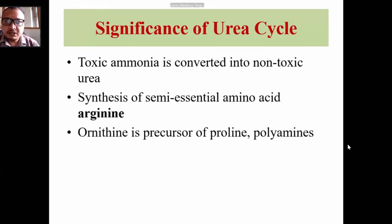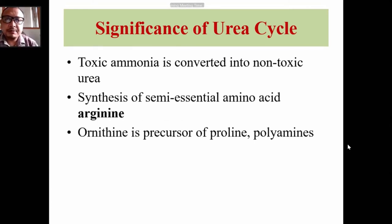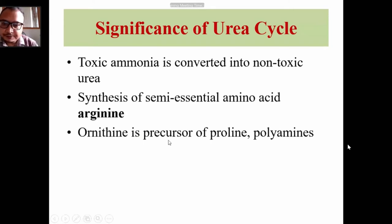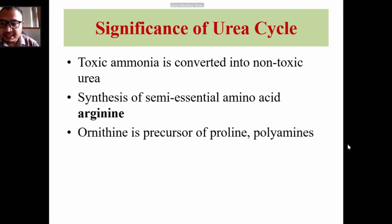The significance of the urea cycle is primarily the detoxification of ammonia liberated during amino acid catabolism. Through the urea cycle, toxic ammonia is converted to the non-toxic compound urea, which is excreted via the kidney. The urea cycle is also necessary in adults for synthesis of arginine, which can be synthesized in the liver. Additionally, it is necessary for synthesis of ornithine, which is a precursor for proline, and polyamines.